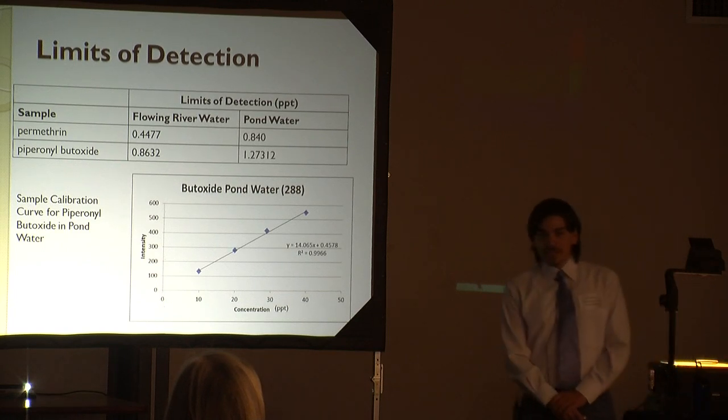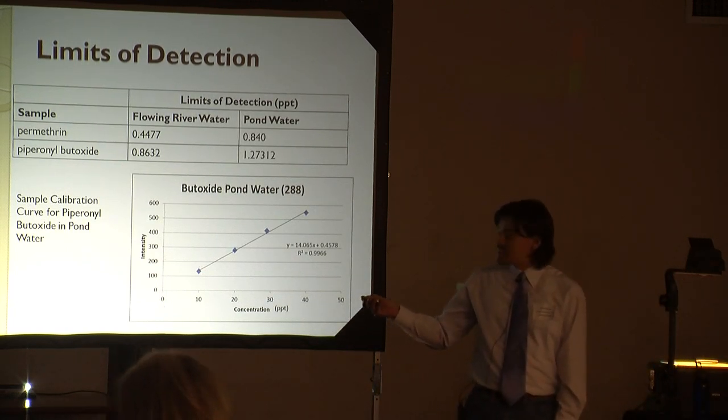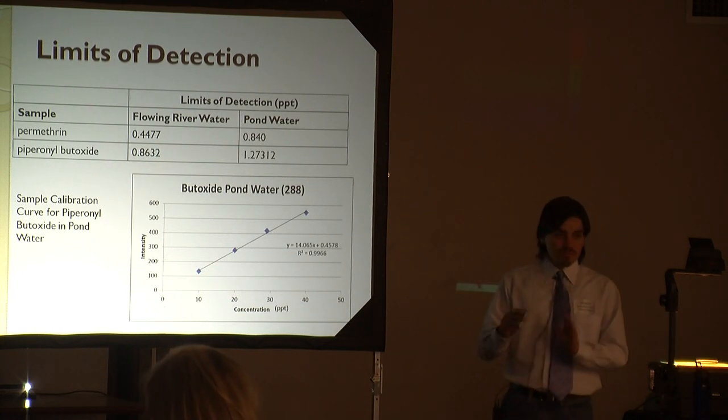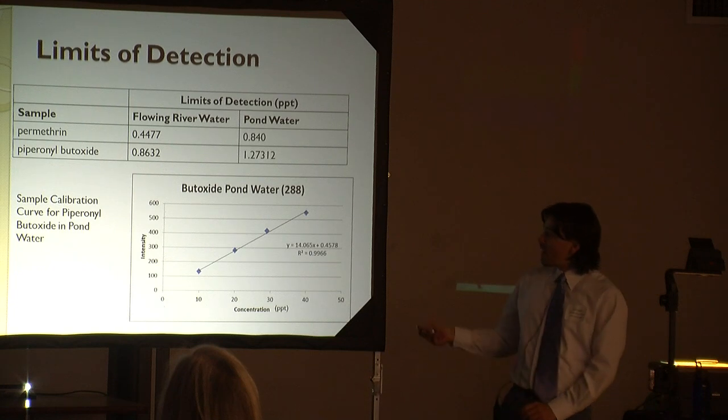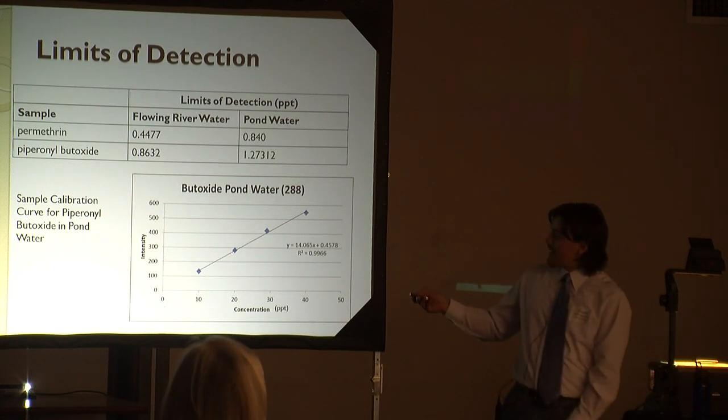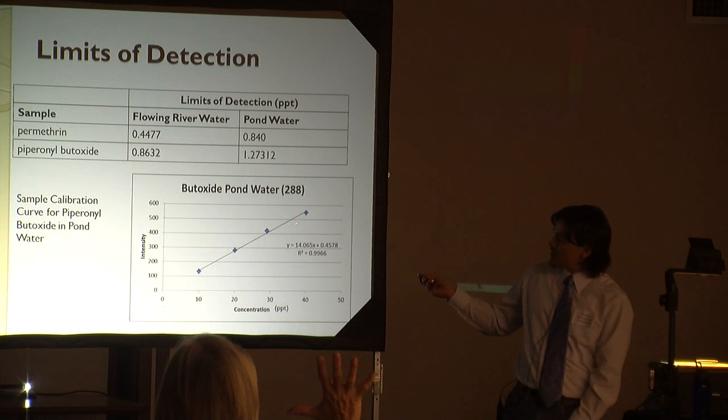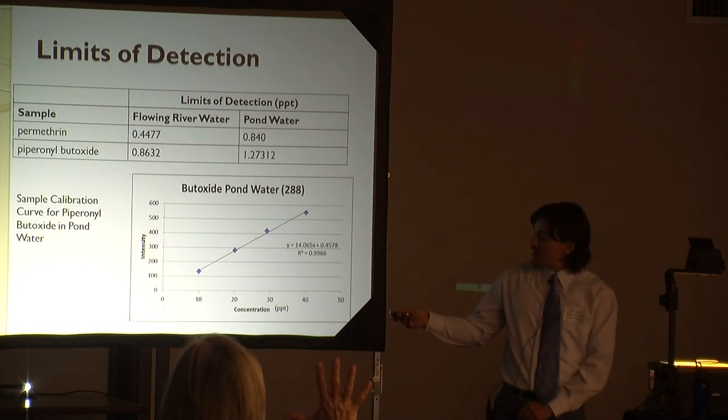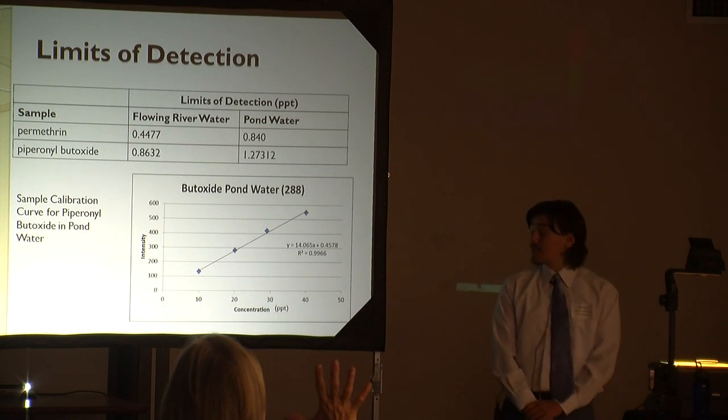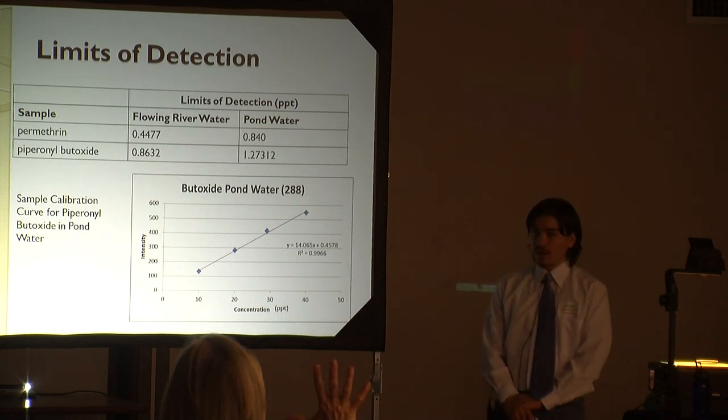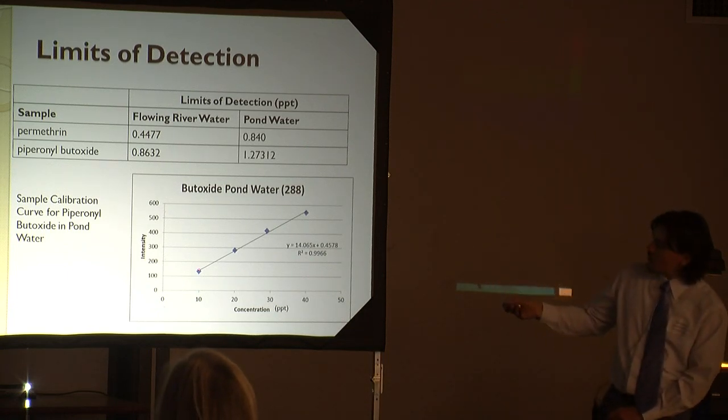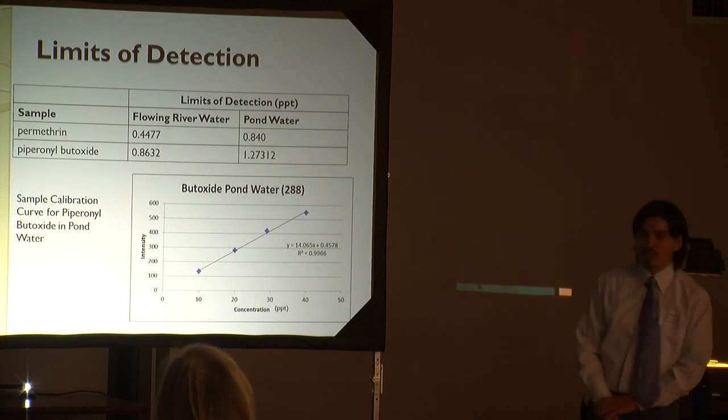A standard addition - we started out with an unknown sample, our pond water, and we added a known concentration of our standard. By adding that in increments, we generate a straight line. By generating the straight line, we can extrapolate the exact concentration of our contaminants in our unknown or our pond water. That's essentially how we know what the concentration of our pond water is and how we generate this curve.